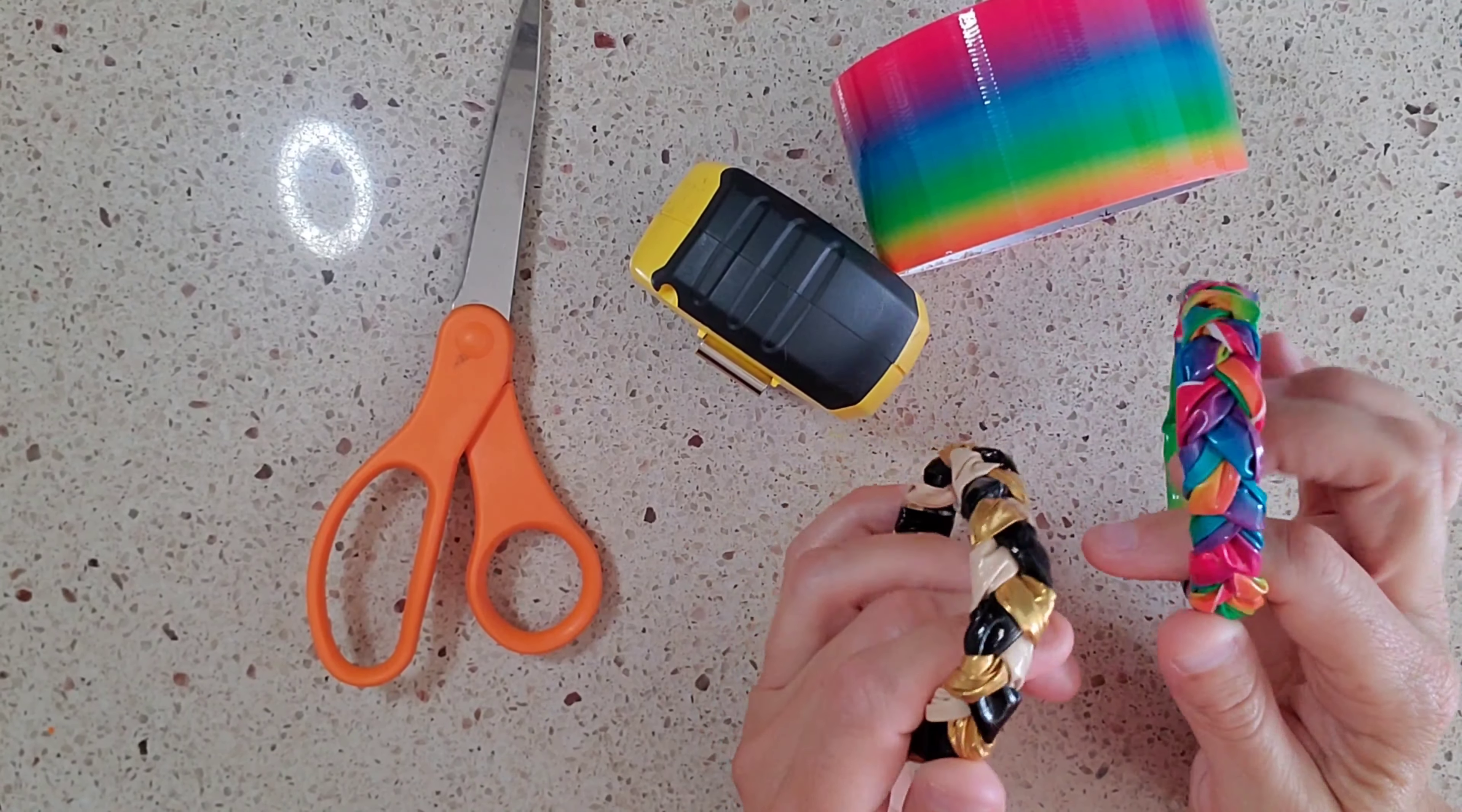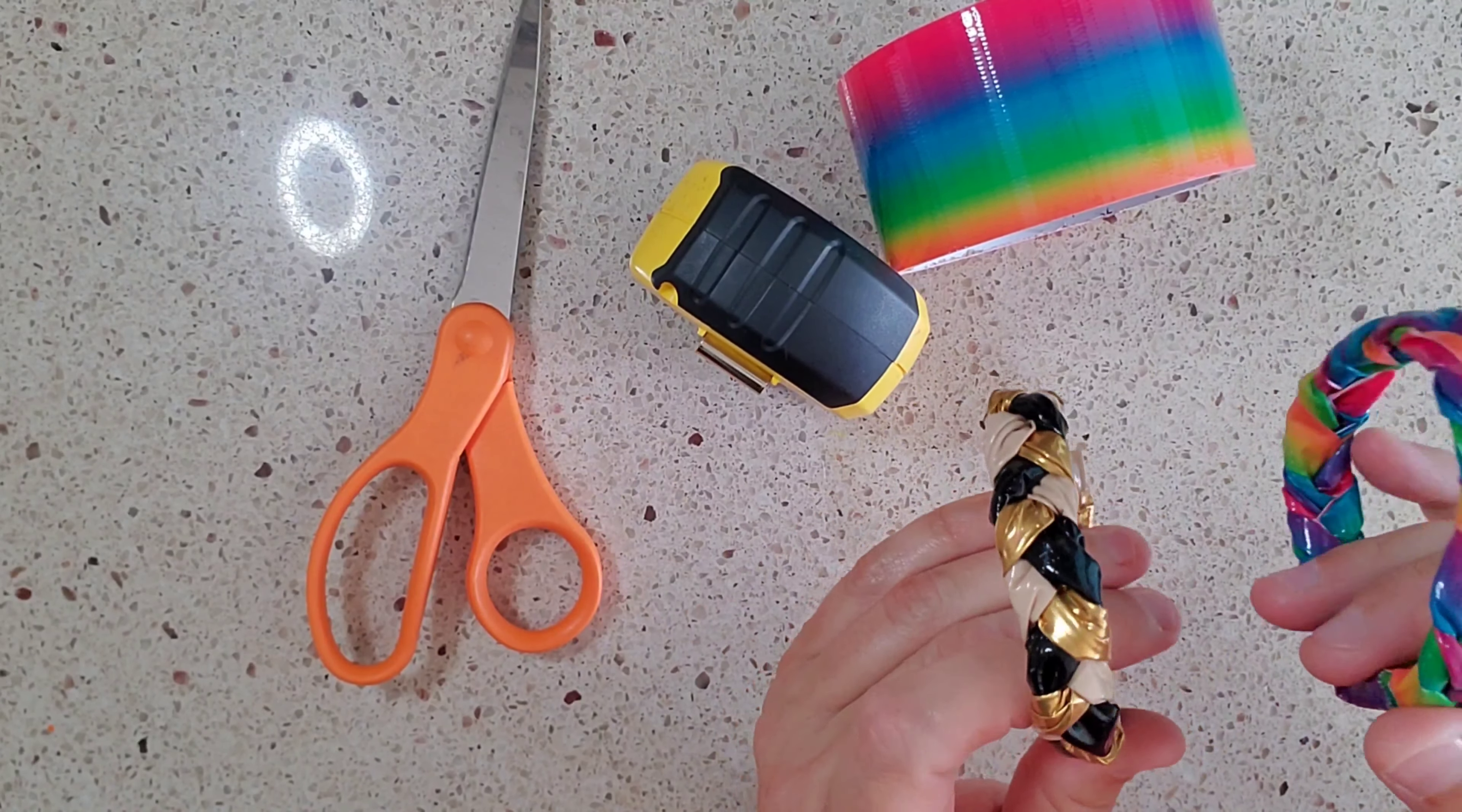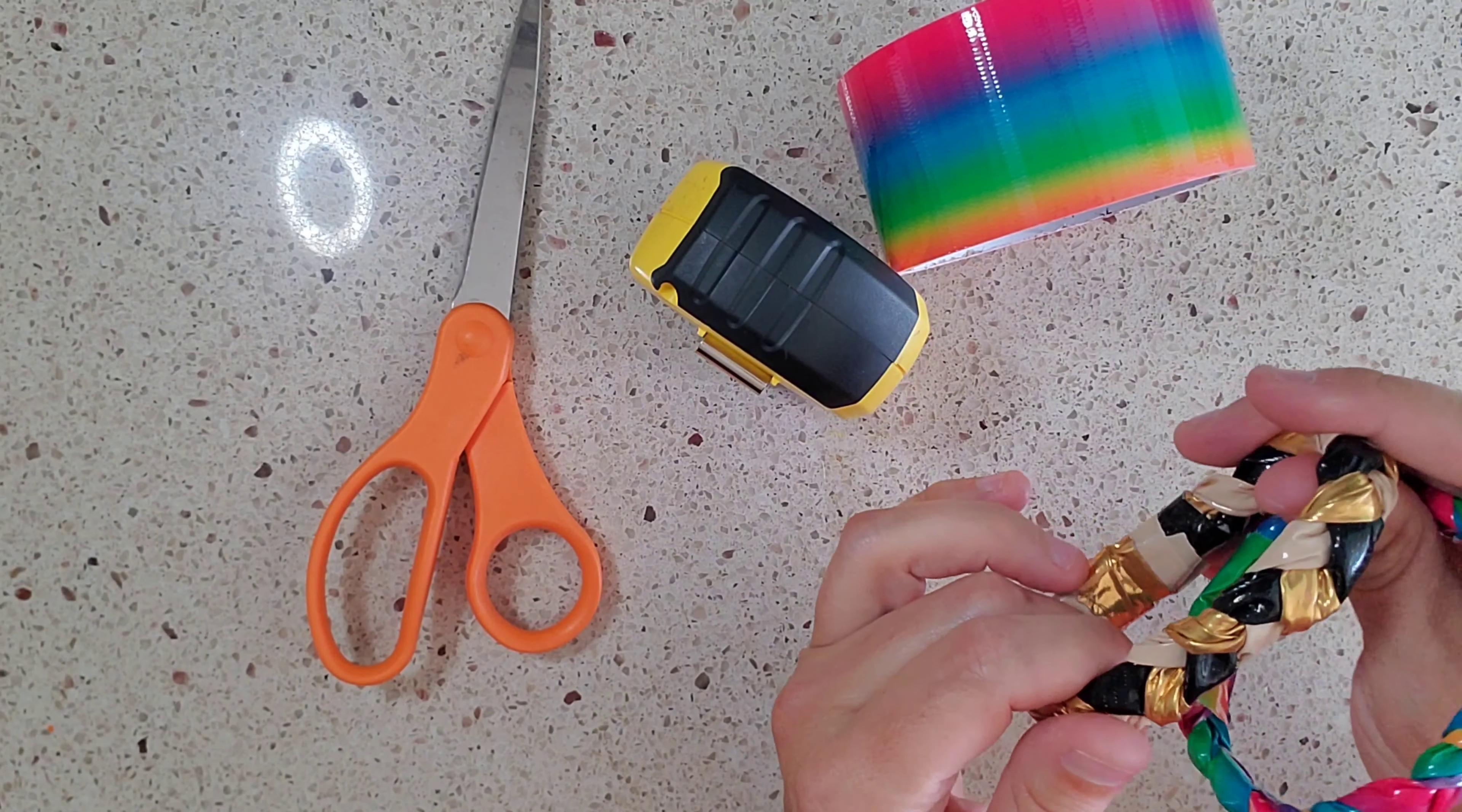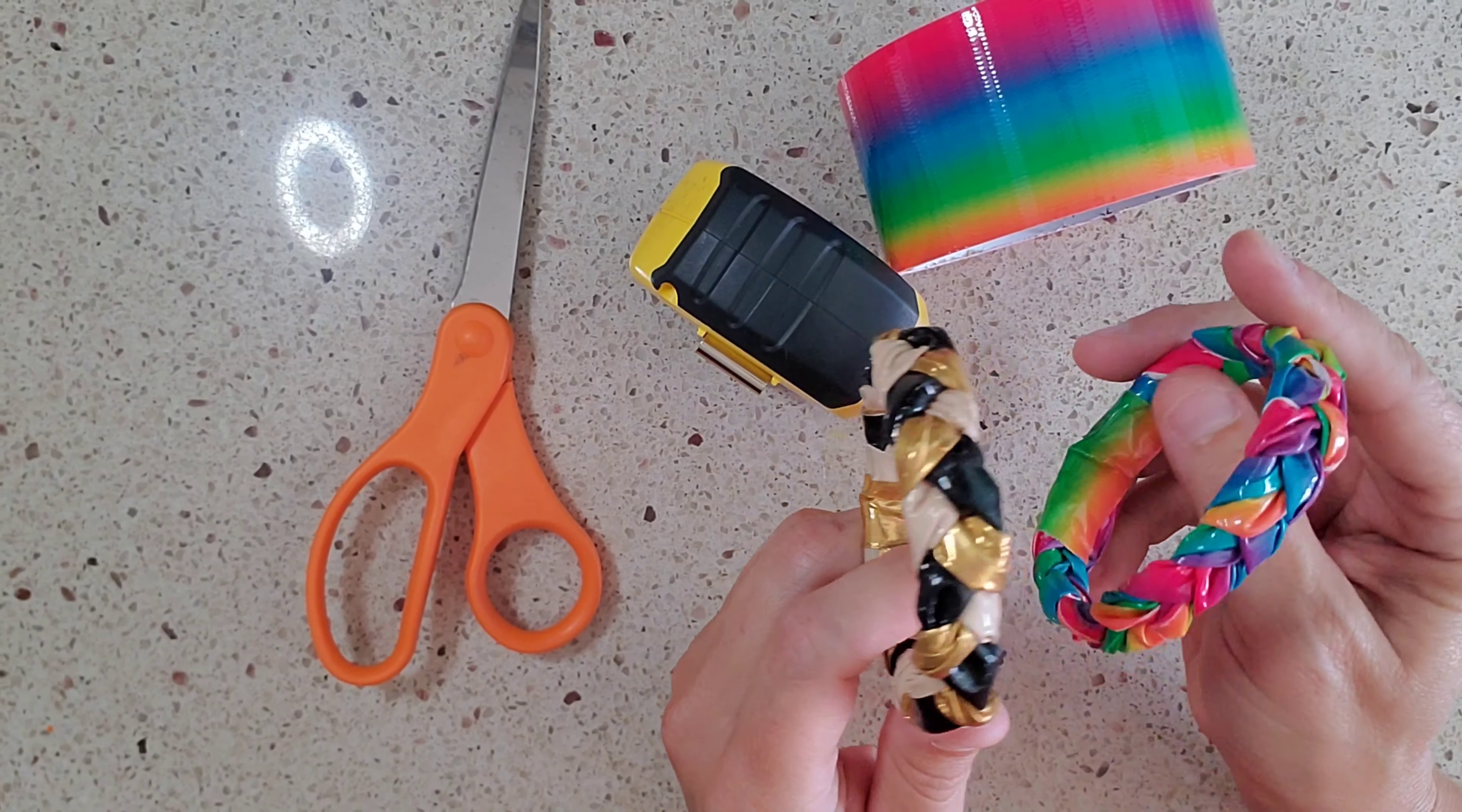Hi everyone! Today we're going to be making some duct tape bracelets. They're very simple to make, and the nice part about them is they are waterproof so you could actually wear them to the pool, to the beach, you can make these on a vacation trip with family or with friends. They're pretty easy to make as long as you have some duct tape around.